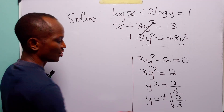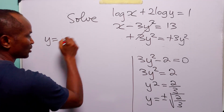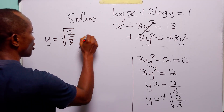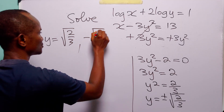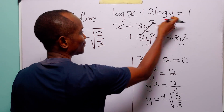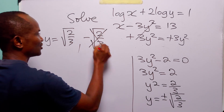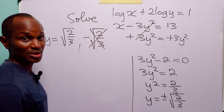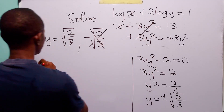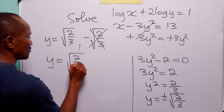From here we have two values of y: y is equal to root(2/3) or minus root(2/3). But y is the argument of a logarithm and it cannot be negative, so this negative value of y is not acceptable. The only value of y that satisfies this equation is y equal to root(2/3).